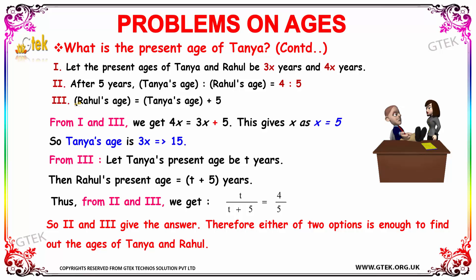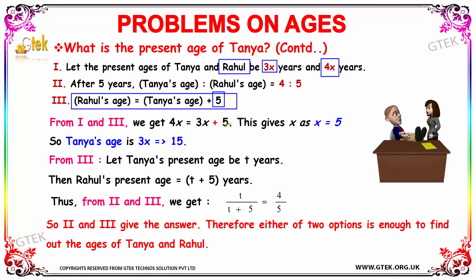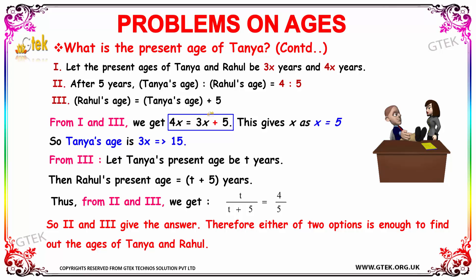Taking the first and third facts, Rahul's age is 5 years more than Tanya's age, so Rahul's age is 4x and Tanya's age is 3x. Therefore Tanya's age plus 5 equals Rahul's age: 4x = 3x + 5. Taking x terms to the left gives x = 5. Since x = 5, Tanya's age is 3 × 5 = 15 years. Using facts 1 and 3, we also find Tanya's age to be 15.